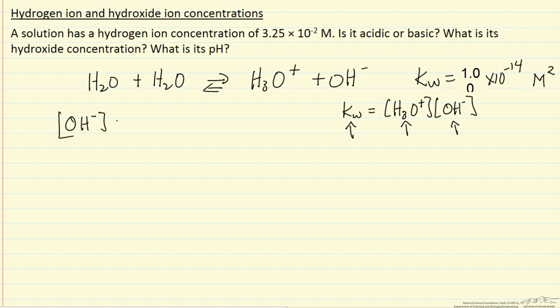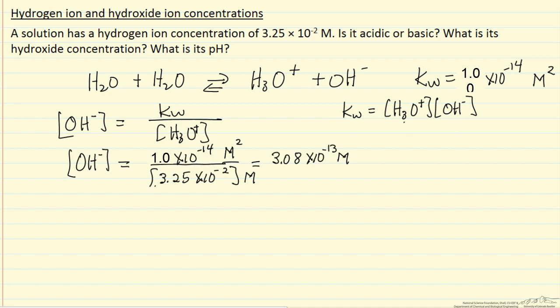So concentration of hydroxide in this solution is going to be kW over the hydronium ion concentration. We have the hydroxide concentration, it's much smaller than 10 to the minus 7, so this is an acidic solution.